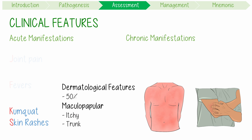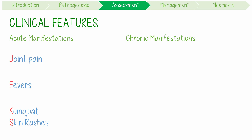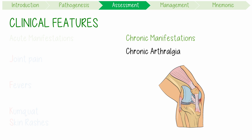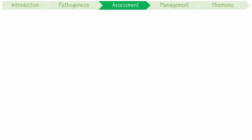Following acute infection, chronic disease may persist, typically with a chronic form of the arthralgia. This phenomenon is especially common in patients with the HLA-B27 genotype.